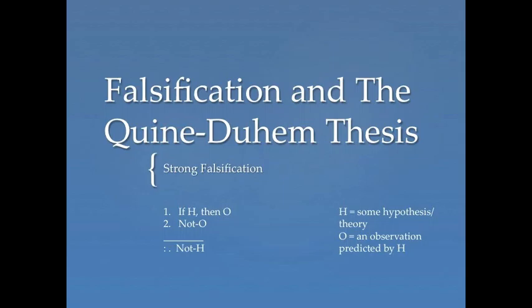More precisely, we might think of strong falsification in the following manner. If you recall from the previous lecture, we talked about a method for disconfirmation, and it went something like this: if H, then O, not O, therefore not H.